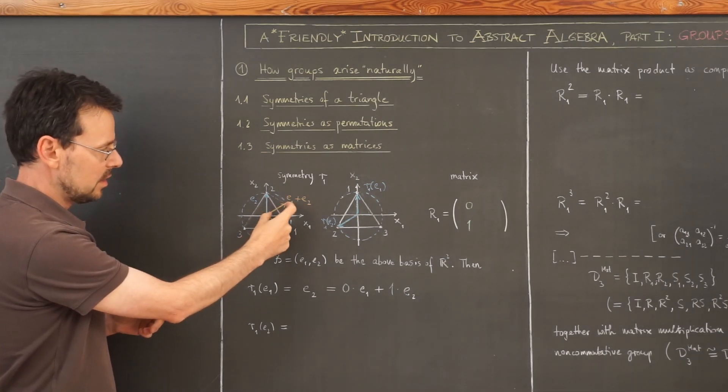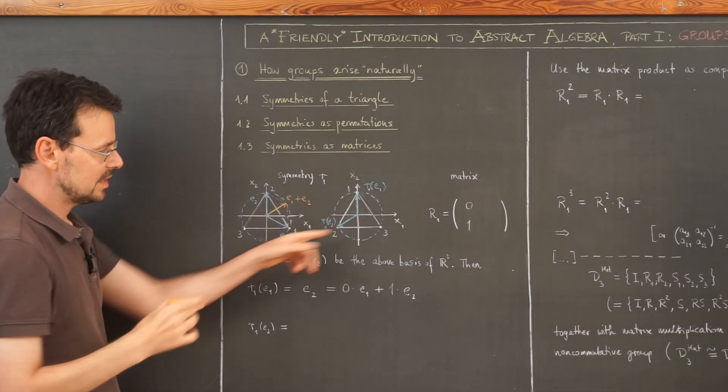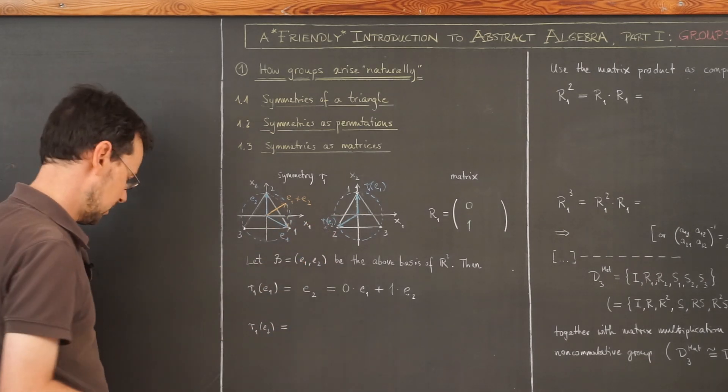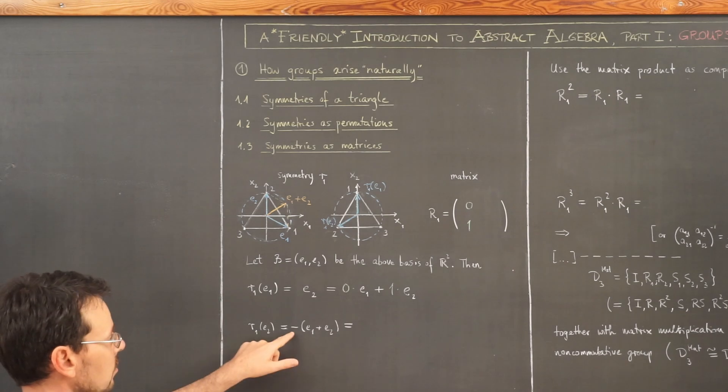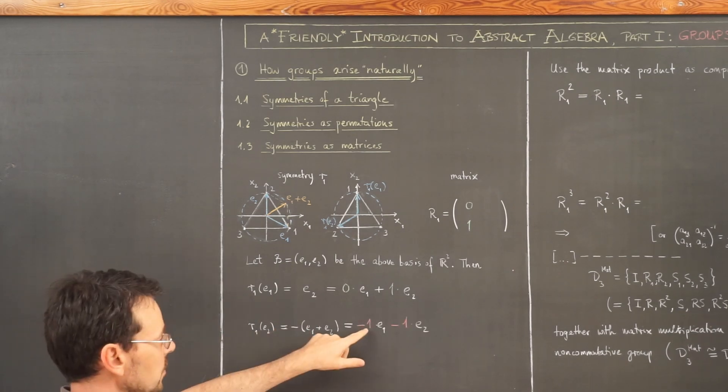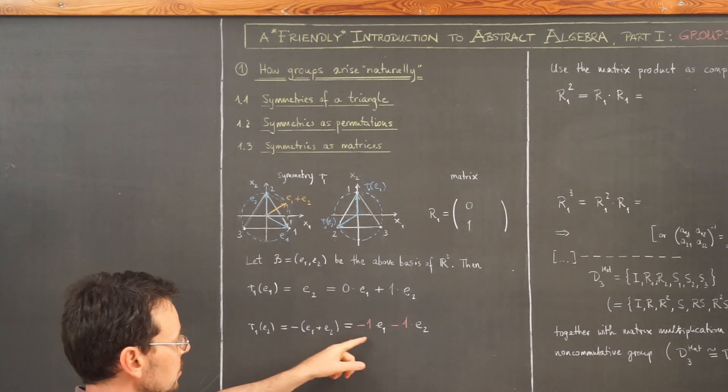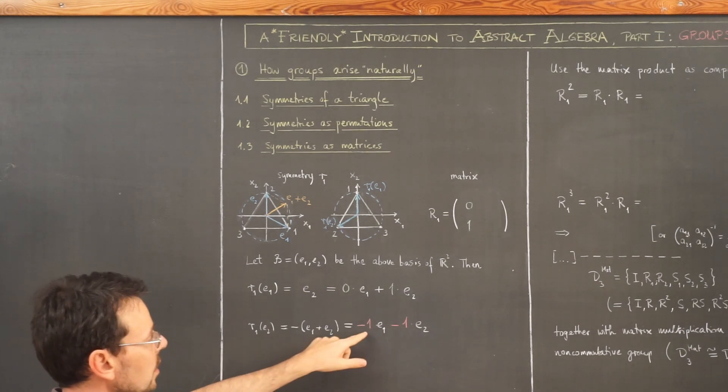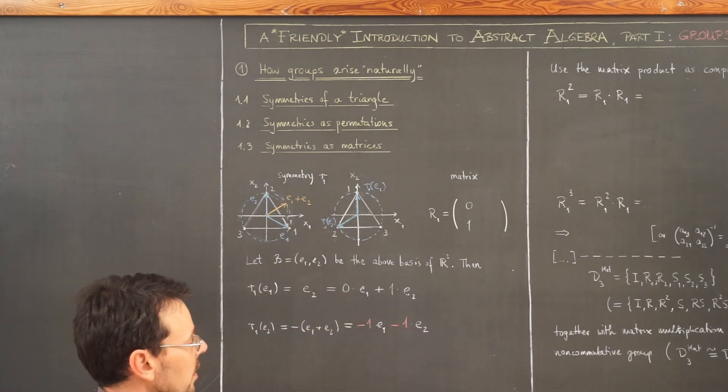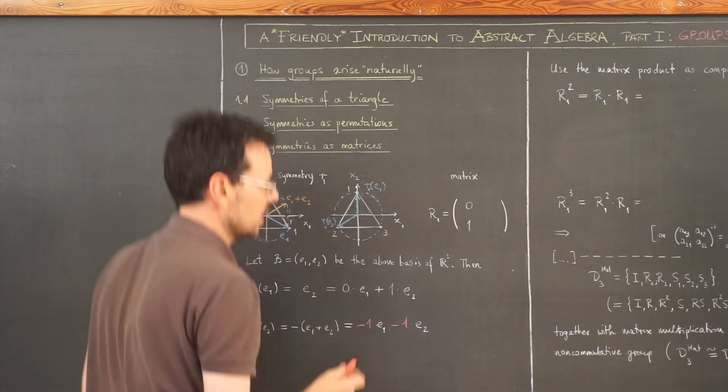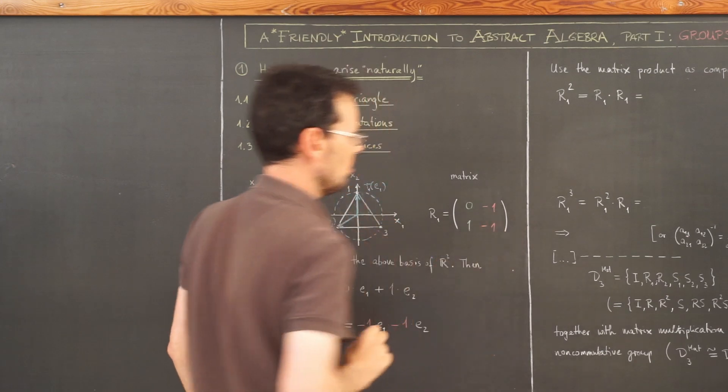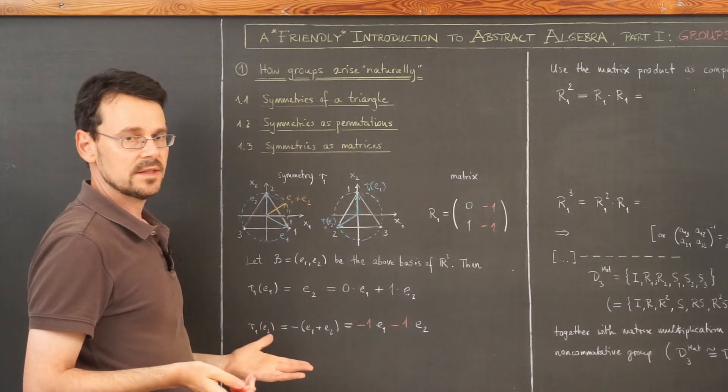So if I take the negative vector of this one, I exactly end up with this vector here that I'm looking for. So this here is nothing but negative E1 plus E2. So this gives me the following basis representation of this image vector here. It is minus 1 times E1 minus 1 times E2. So the second column of my matrix is minus 1 minus 1.